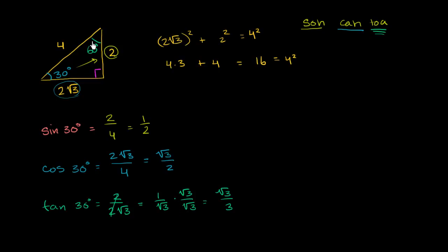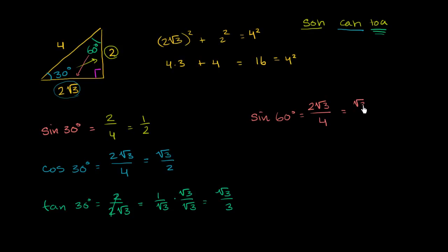Now let's use the same triangle for the 60° angle. The sine of 60°: sine is opposite over hypotenuse. The side opposite 60° is 2√3, and the hypotenuse is 4. So sine of 60° = 2√3/4 = √3/2. The cosine of 60°: cosine is adjacent over hypotenuse. The adjacent side to 60° is 2, and the hypotenuse is 4. So cosine of 60° = 2/4 = 1/2.